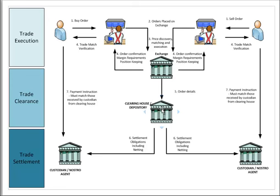Throughout the trading day, there are a number of trades that are coming through from the exchange and the clearinghouse is responsible for performing netting. Netting is where a number of trades with the same counterparty and the same product can be grouped together and netted into a single transaction rather than multiple. Whilst it's performing the netting, at the end of the day, it will create one net figure for the settlement obligations of that counterparty.